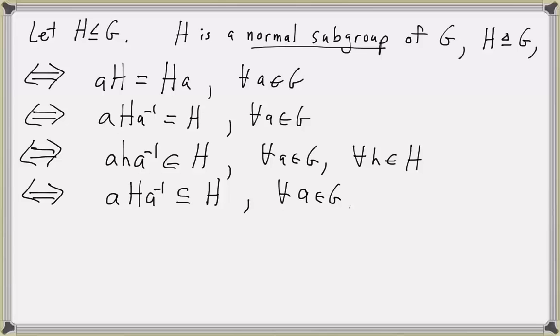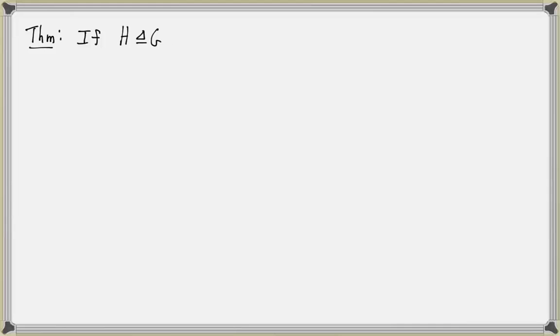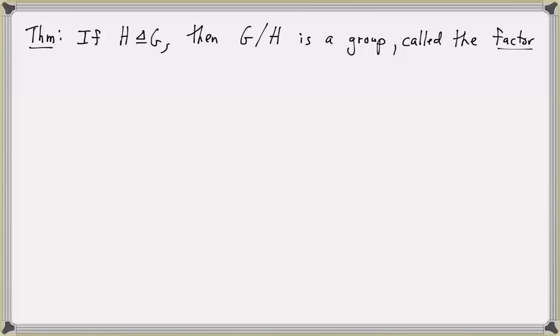Normal subgroups are important for discussing the structure of a given finite group. One important fact is that if H is a normal subgroup of G, then the set of left cosets of H in G actually forms a group, called the factor group or quotient group of G by H.